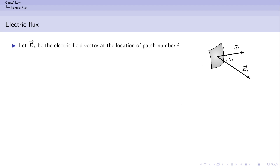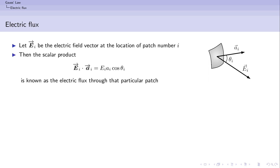Let us take one of these patches — the i-th patch. Let's say the electric field on this patch is Eᵢ, the area vector is aᵢ, and the angle between the electric field and the area vector is θᵢ. Then the scalar dot product Eᵢ · aᵢ = Eᵢ aᵢ cos θᵢ is known as the electric flux through this particular patch. So electric flux is simply the dot product of the field with the area vector.